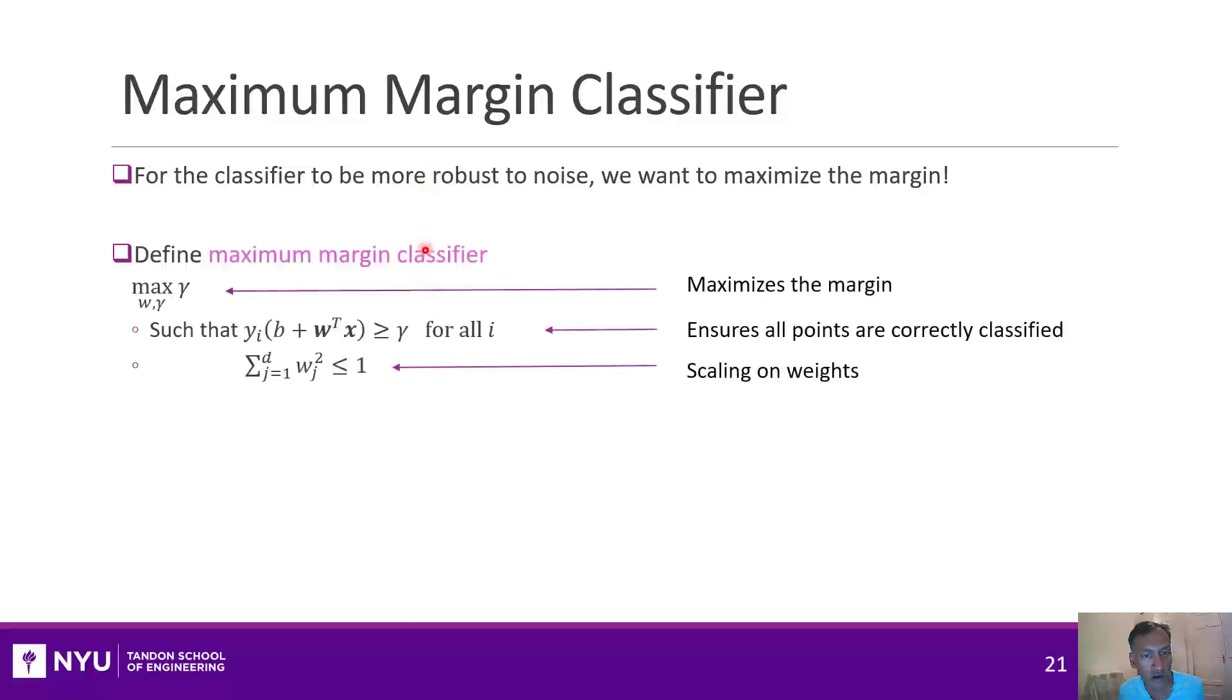So we can write that as an optimization problem like this. This looks a little confusing, but if we walk through it, you can see why it works. This constraint in the middle. So we want to pick both a W and a B for a classifier. And this constraint in the middle guarantees that it is indeed perfectly separable.